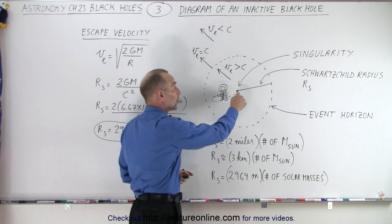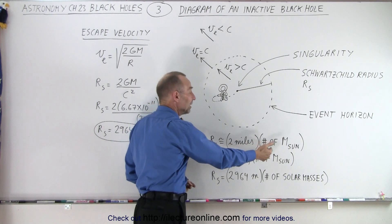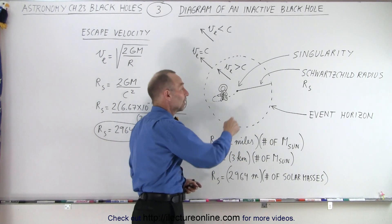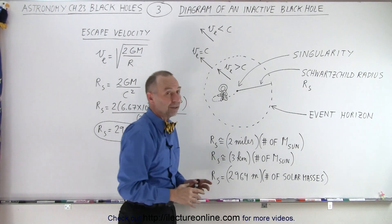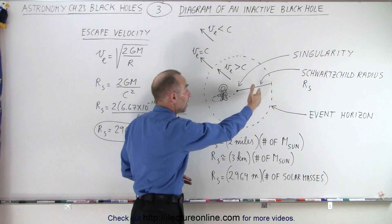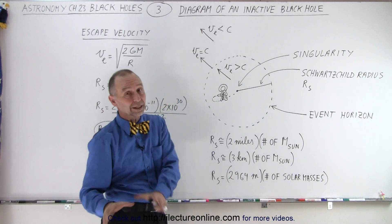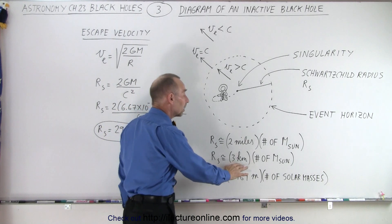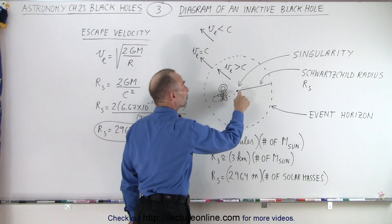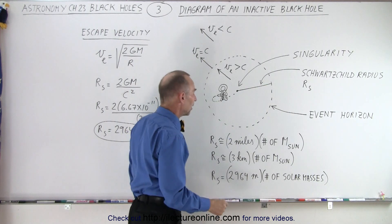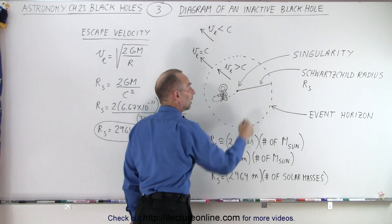The Schwarzschild radius is approximately two miles times the number of solar masses inside. So for three solar masses, that's six miles from the singularity to the event horizon. For five solar masses it would be 10 miles; for 10 solar masses, 20 miles, and so forth. In kilometers, it's about three kilometers per solar mass — so three solar masses gives nine kilometers, and 10 solar masses gives 30 kilometers.